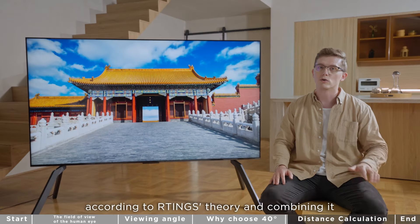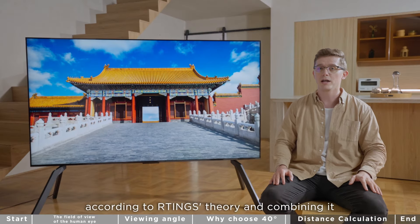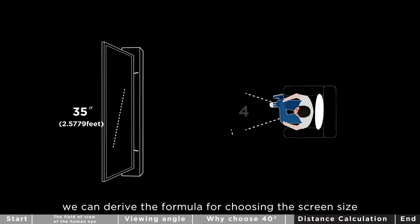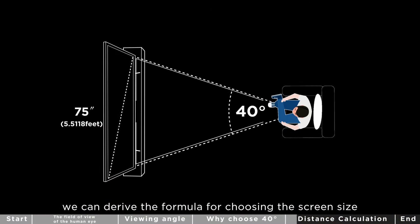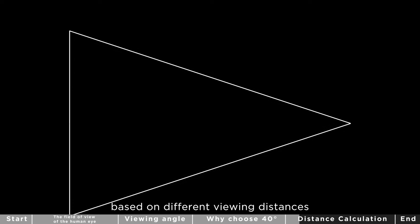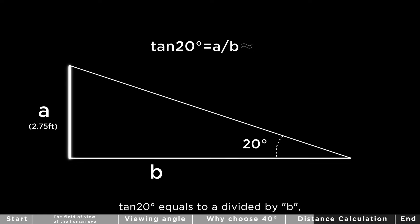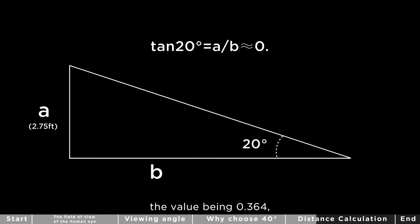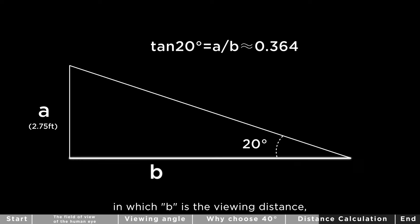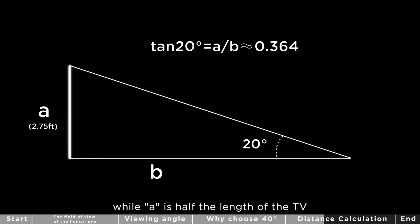So according to Arting's theory and combining it with the 40 degree viewing angle, we can derive the formula for choosing the screen size based on different viewing distances. Once we have the angle determined, we get a 20 degree field of vision. According to tangent function, tan 20 equals a divided by b, the value being 0.364, in which b is the viewing distance, while a is half the length of the TV.